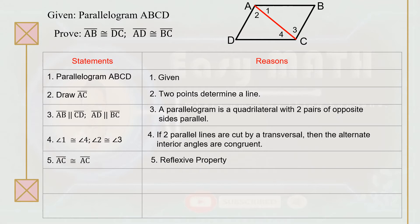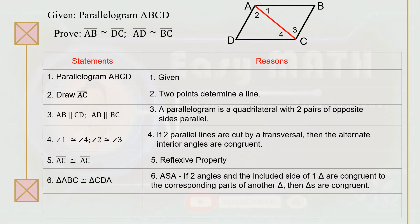For the fifth statement, segment AC is congruent to itself because of the reflexive property. Now we can identify two congruent triangles. Triangle ABC is congruent to triangle CDA because of the ASA postulate — if two angles and the included side of one triangle are congruent to the corresponding parts of another triangle, then the triangles are congruent.